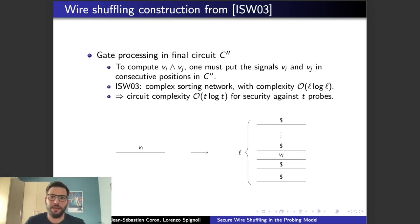Going a bit deeper, in the final circuit C'', essentially, each one input gate is pretty straightforward. Instead, the operations which require two inputs need a little bit more attention. In fact, to compute the operation between v_i and v_j, one must put the signals in the same consecutive position. And in the ISW03, they used a sorting network to achieve such property, which has a cost of L log L. And from such cost depends the overall complexity of O(T log T) for security in the worst case model against T probes.